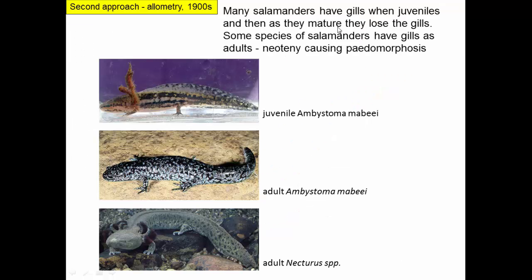Many salamanders have gills as juveniles and lose them as adults. Here, Ambystoma as a juvenile has external gills, which are lost in the adult. But some species of salamanders actually retain gills as adults via neoteny, achieving a paedomorphic final state. This is Necturus — as an adult it still has the gills it had as a juvenile, having stopped development of that part of its body and retained the juvenile trait into adulthood.